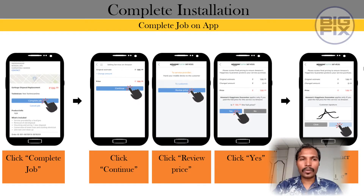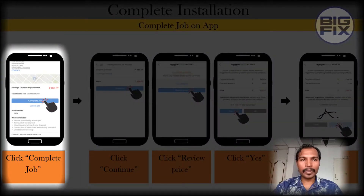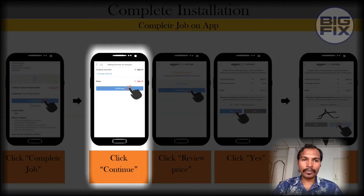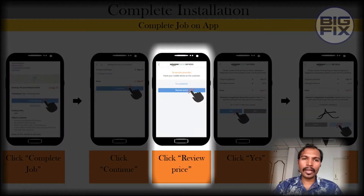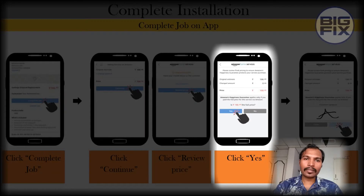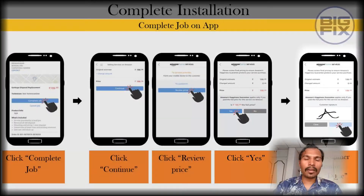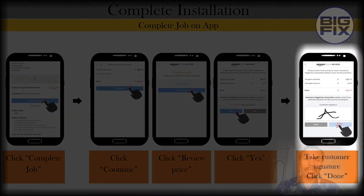Now, to complete the job on your app, click complete job, then click continue, then review the price, click yes, and then take the customer's signature and click done. Make sure to take the customer's signature before clicking on done.